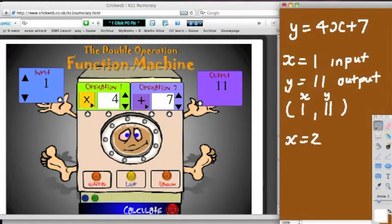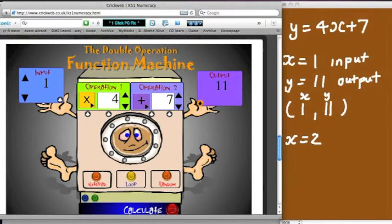So now let's have a new input of, say, 2. So you try this one, when x is 2. I'll hide the answer a minute. Up the value to 2. What do you think the answer's going to be? Let's see if you're right. Click on calculate. Yeah, out popped 15.